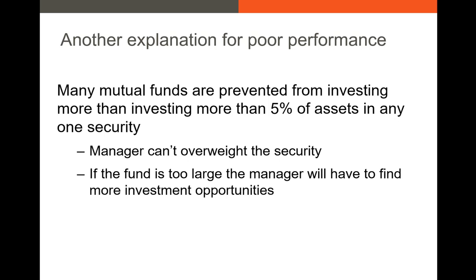We cannot invest more than 5% of our portfolio in any one asset. For example, in the fall 2023 semester, we found that TSMC — Taiwan Semiconductor — was extremely undervalued. So we wanted to invest a large amount of money into TSMC, but we couldn't invest more than 5% of our portfolio. Any potential gains we would have gotten had we overweighted by more than 5% — we lost that. It was an opportunity cost, and that's a condition that a lot of mutual fund managers actually face.